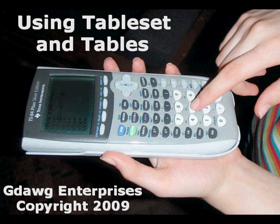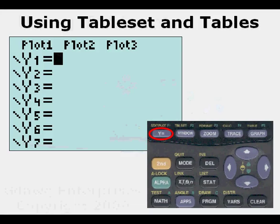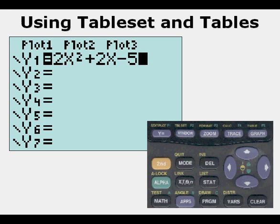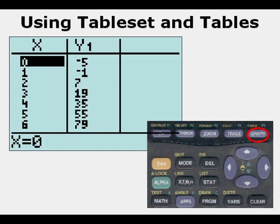Using tableset and tables. We go to the y equals view and put in a function. This will be the function we evaluate today, the quadratic function 2x squared plus 2x minus 5. We can evaluate this function by going to our table view, pressing second then graph, and here we have the standard table.